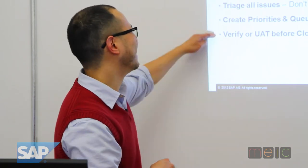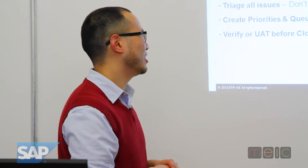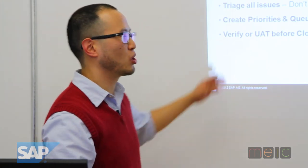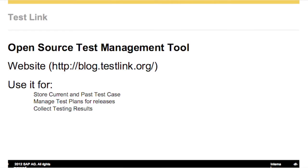Triage all issues — create priorities and queues. That's what we were talking about before. Don't fix the first one that comes in because odds are they're not in order of priority. UAT — verify UAT before closing. Remember we were talking about the states. Let's talk about one more tool.